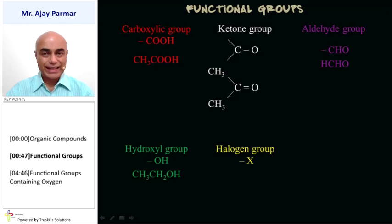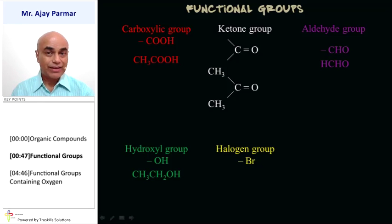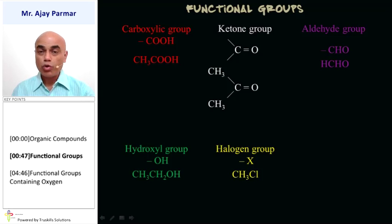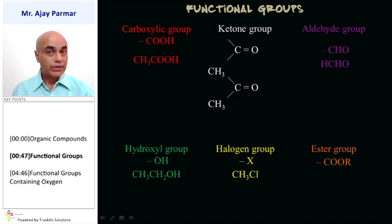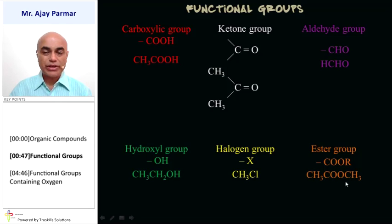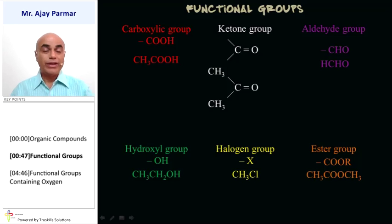The halogen group is normally represented as X, but instead of X we can have F, Cl, Br, or iodine. Any of the halogens can be the functional group — for example CH3Cl, that is chloromethane or methyl chloride. The ester group is COO; the R here represents the alkyl group. For example, CH3COOCH3 — the name of this compound is methyl acetate. If instead of CH3 we have C2H5, then that would be ethyl acetate. So it all depends on the functional group.